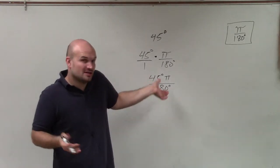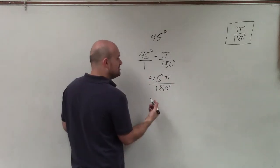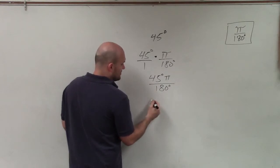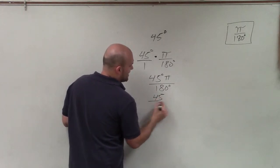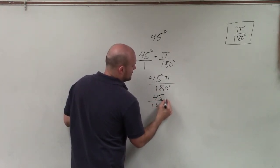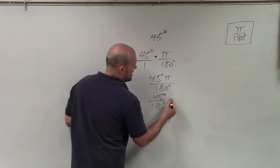Therefore, what I'm going to do is, since my numbers here are like terms, I'm going to now simplify them, or I'm sorry, reduce them. So I have 45 over 180 degrees times pi.